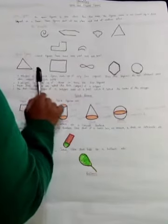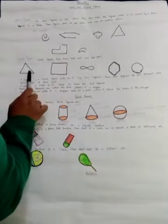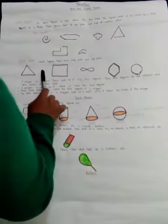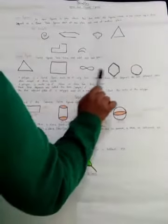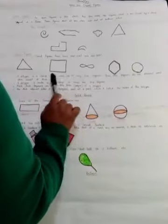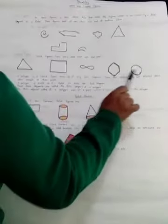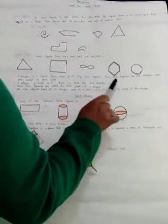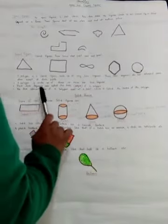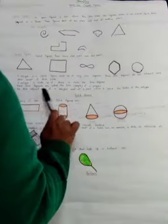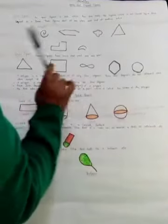A polygon is a closed figure made up of only line segments. These line segments do not intersect each other except at their endpoints. These line segments are called the sides of a polygon. The two adjacent sides of a polygon meet at a point which is called the vertex of a polygon.